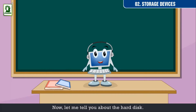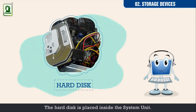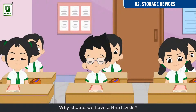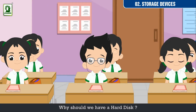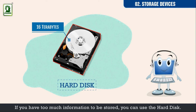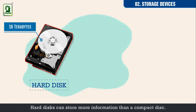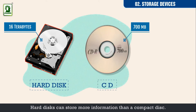Now, let me tell you about the hard disk. There is another type of disk called the hard disk. The hard disk is placed inside the system unit. If you have too much information to be stored, you can use the hard disk. Hard disks can store more information than a compact disk. The information on the hard disk is permanent.